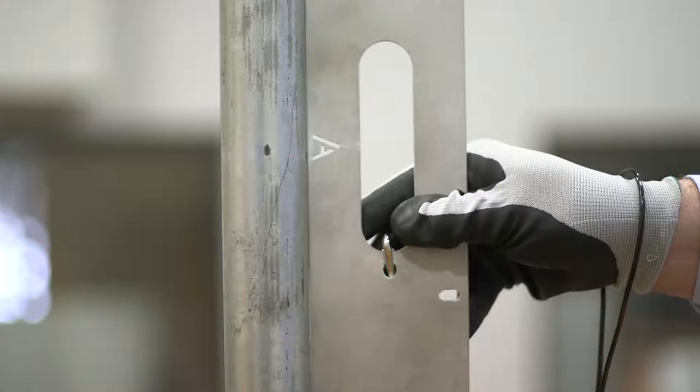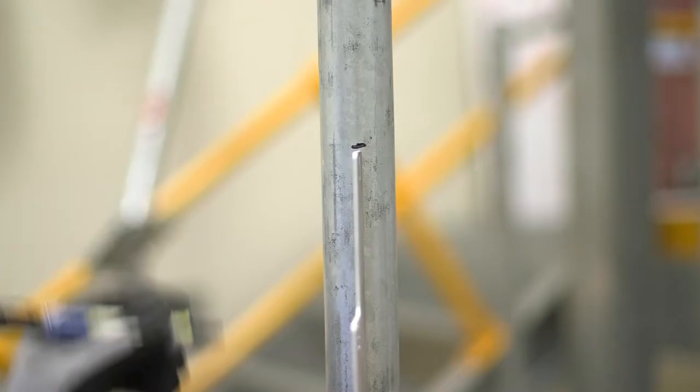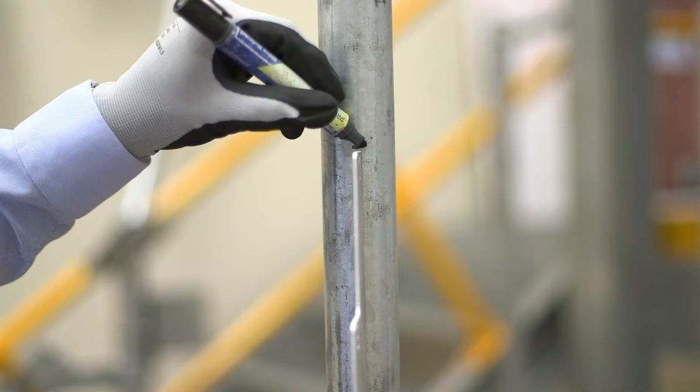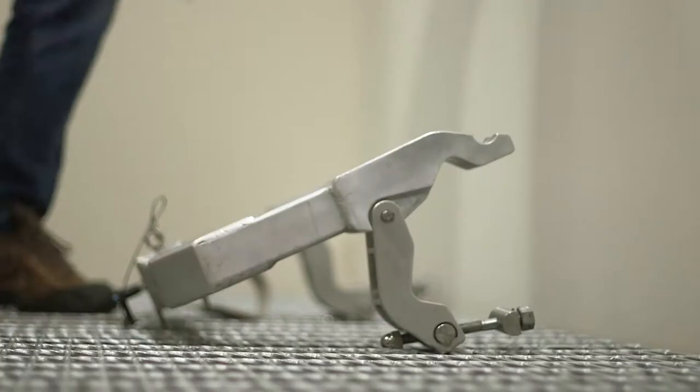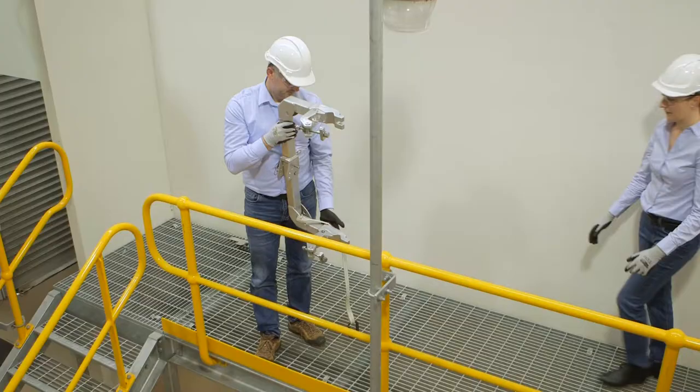Hold marking tool horizontally against the pole and mark the cut. Rest marking tool vertically against the pole top to mark clamp point.